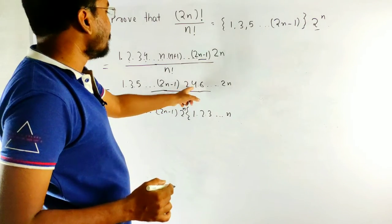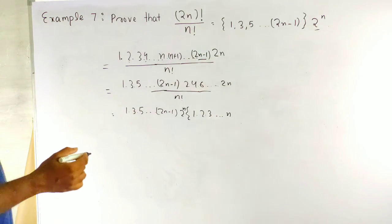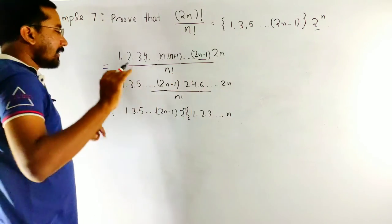Here, this is 2, this is 2, this is 2, up to n. 2 to the power n. As this is multiple. This is 2 to the power n.